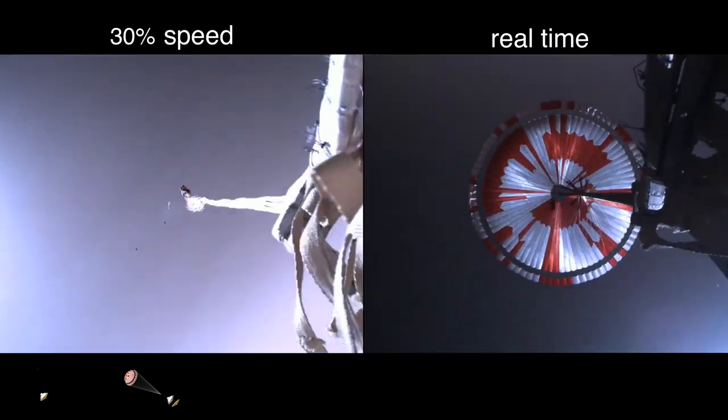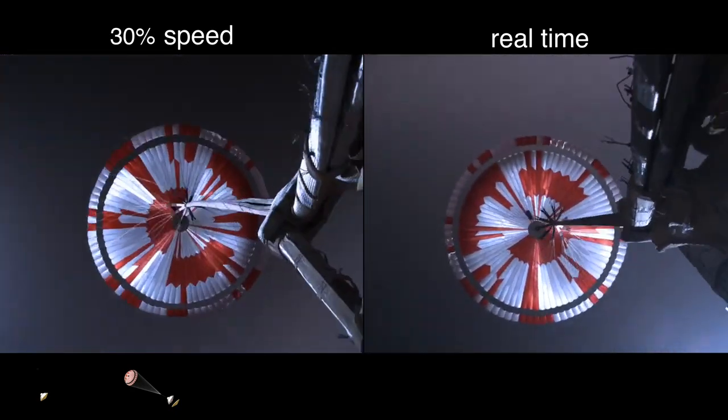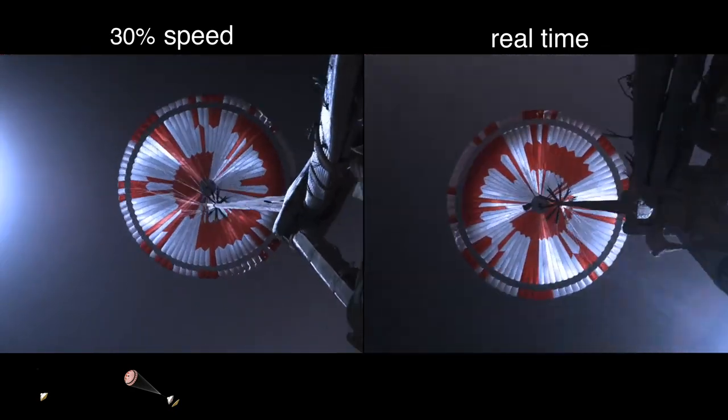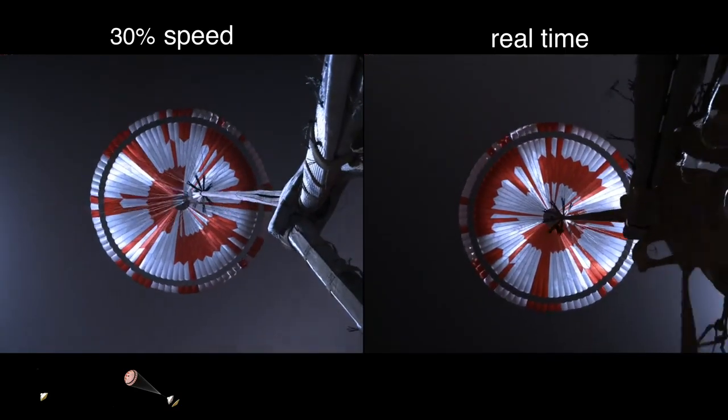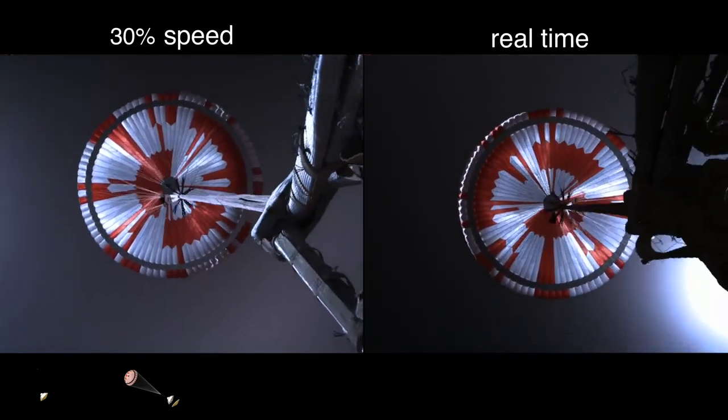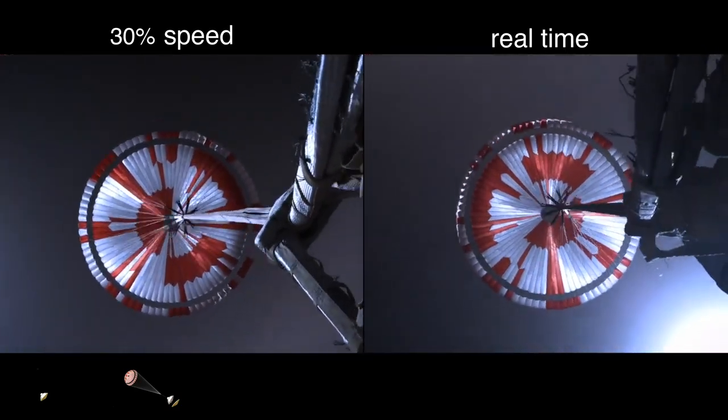Parachute deployed. Navigation has confirmed that the parachute has deployed, and we are seeing significant deceleration in the velocity. Current velocity is 440 meters per second at an altitude of about 12 kilometers from the surface of Mars.